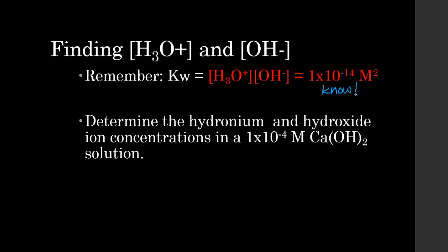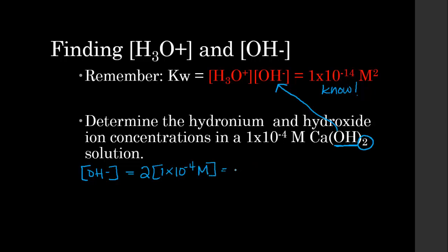Let's determine the hydronium and hydroxide ion concentrations in a 1×10⁻⁴ molar Ca(OH)₂ (calcium hydroxide) solution. Calcium hydroxide is a base because we have OH. The easiest thing to do is find the hydroxide ion concentration first. Since we have two hydroxides, we multiply by 2: [OH⁻] = 2 × 1×10⁻⁴ = 2×10⁻⁴ molar.